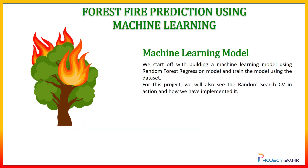Next is our machine learning model. We start off by building a machine learning model using a Random Forest Regression model and train it using the data we have. We will also see Random Search CV in action and how we have implemented it. In brief, Random Search CV is designed to find the best parameters to improve the model — the search is randomized and all other parameters are held constant while the parameters we have defined are tested as variables.